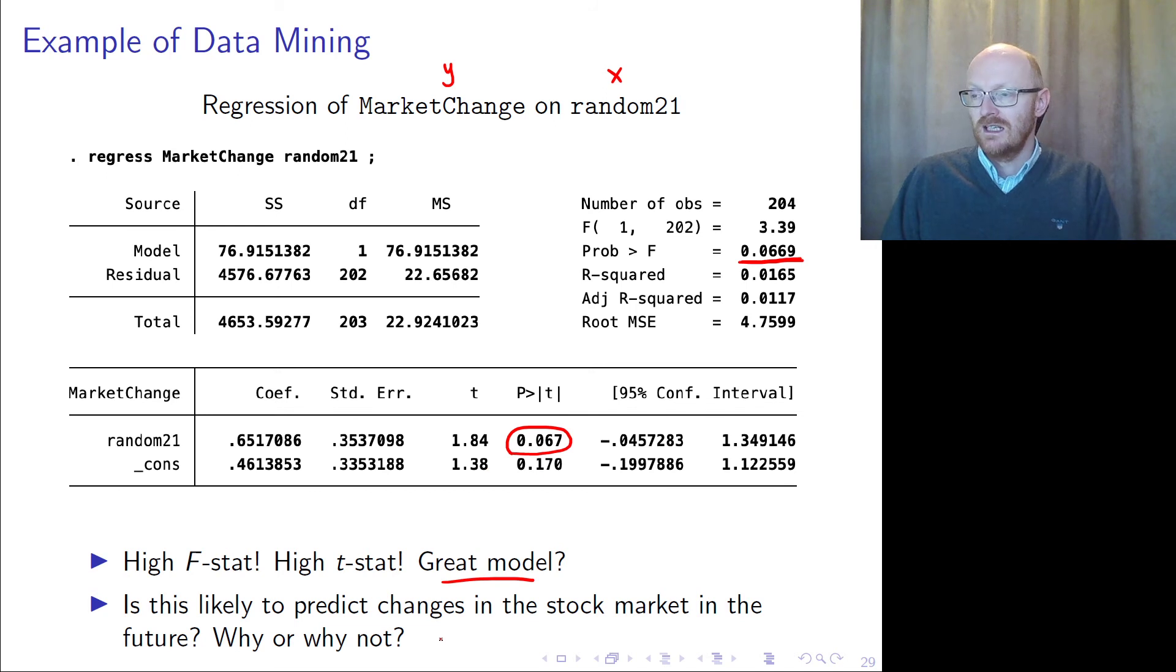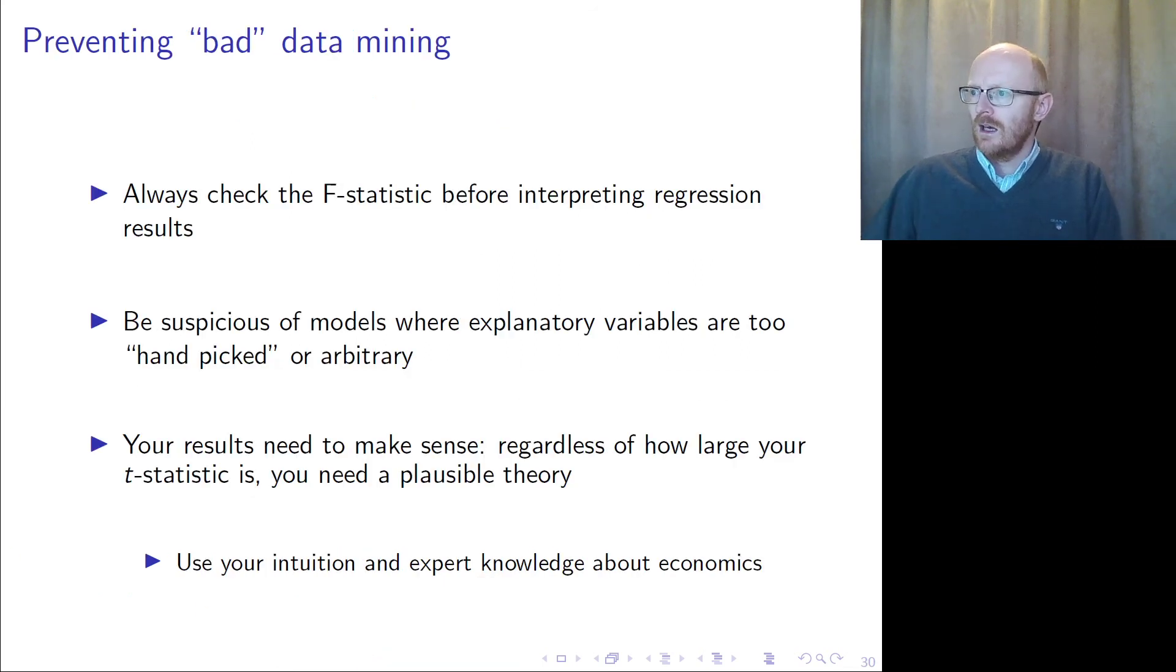And what we have here is that the simple regression is actually significant on the 10% level, with a p-value for the f-test at 6.69%. So does that mean that this model is great? Probably not, because this is just a random sequence of numbers. We probably were lucky to have a sequence which could explain some of the variation in our market price changes.